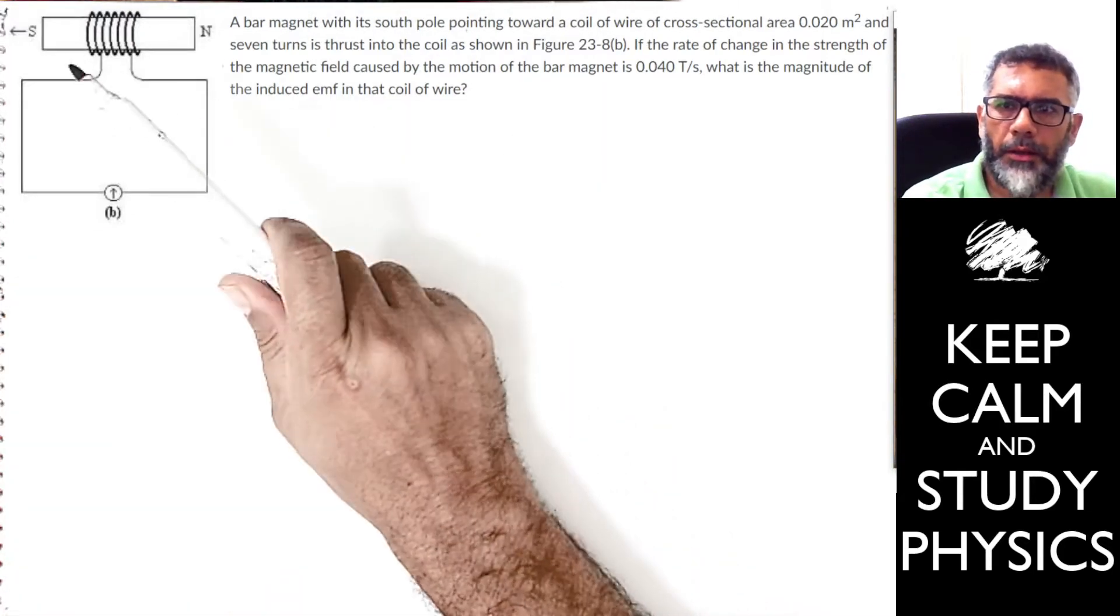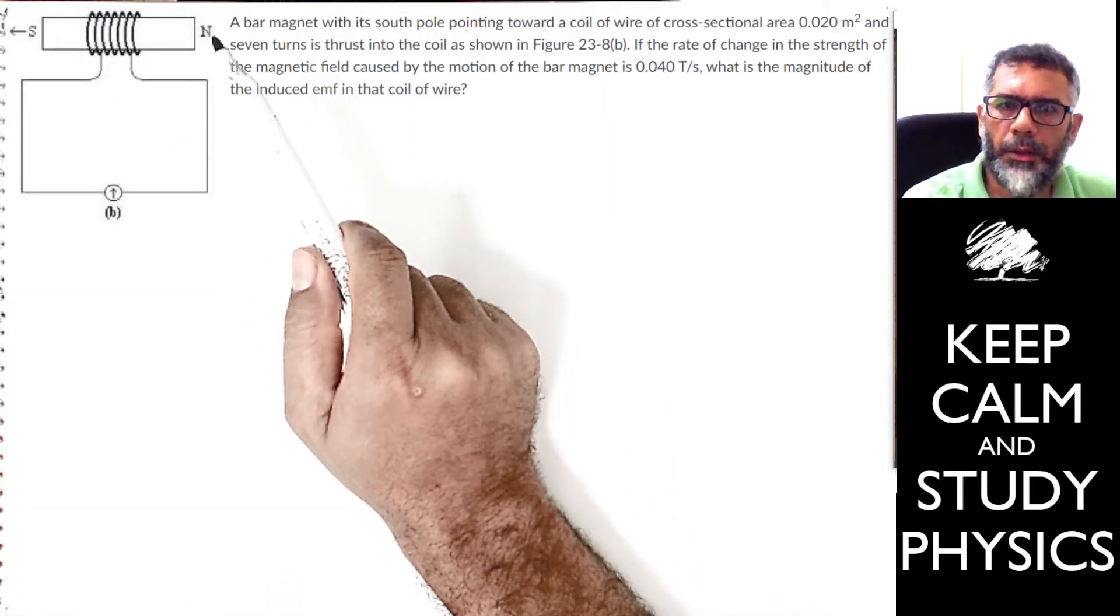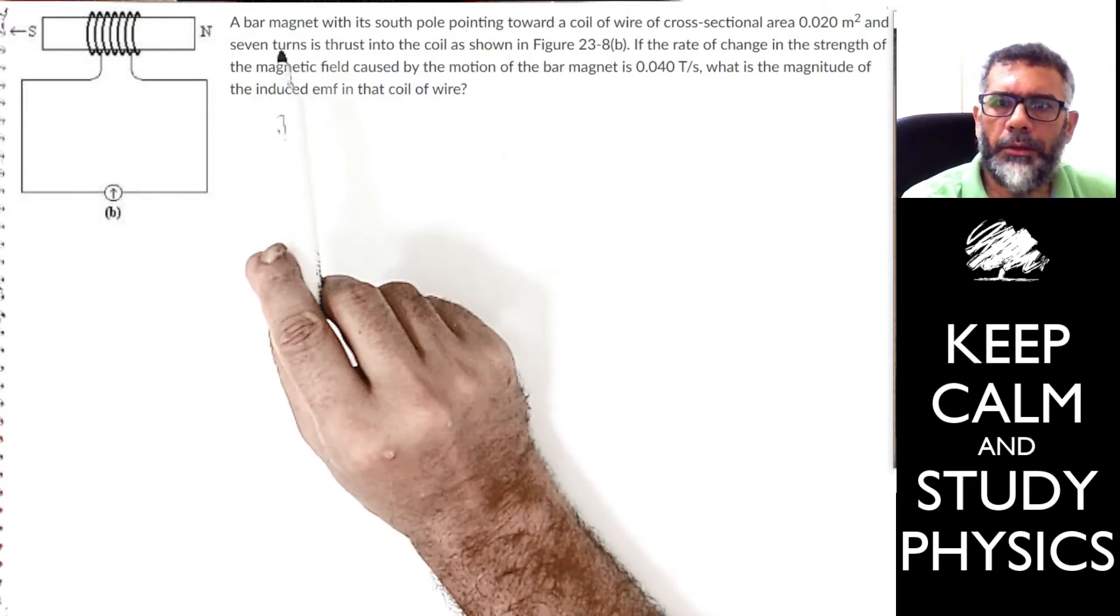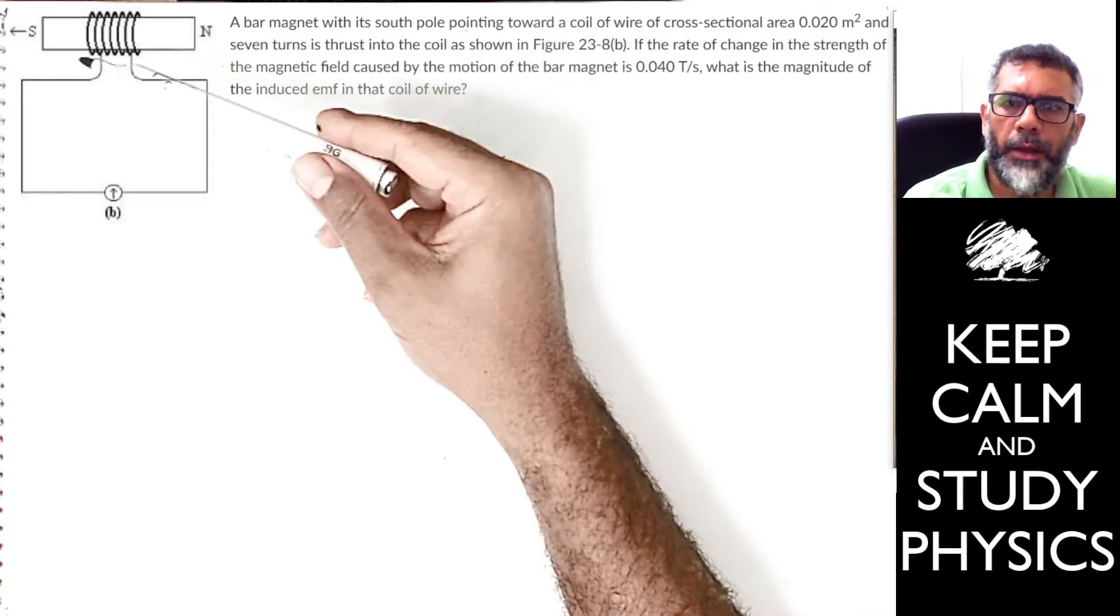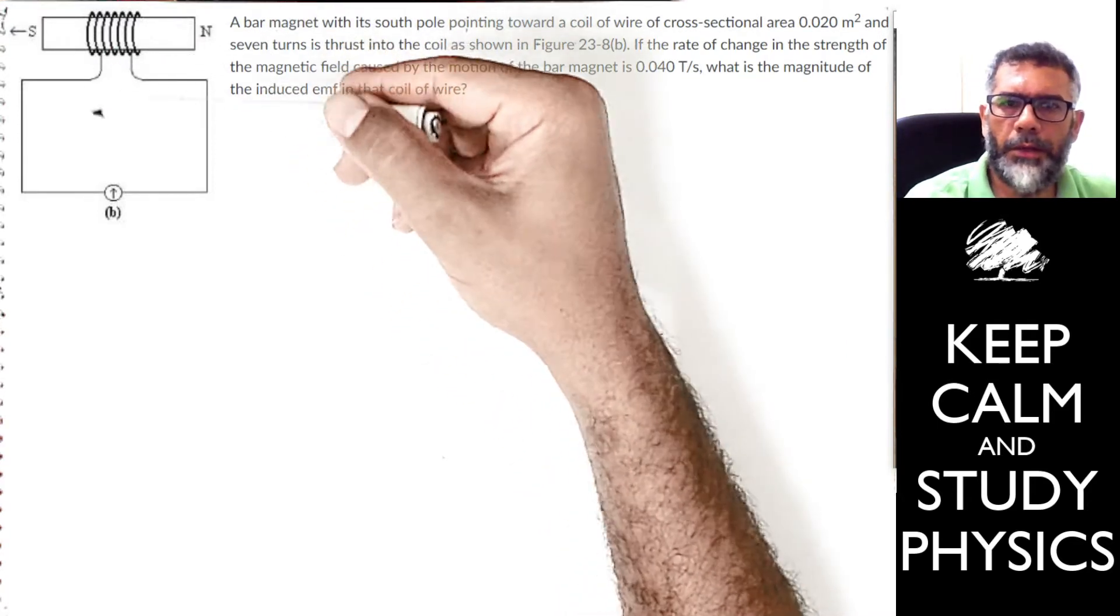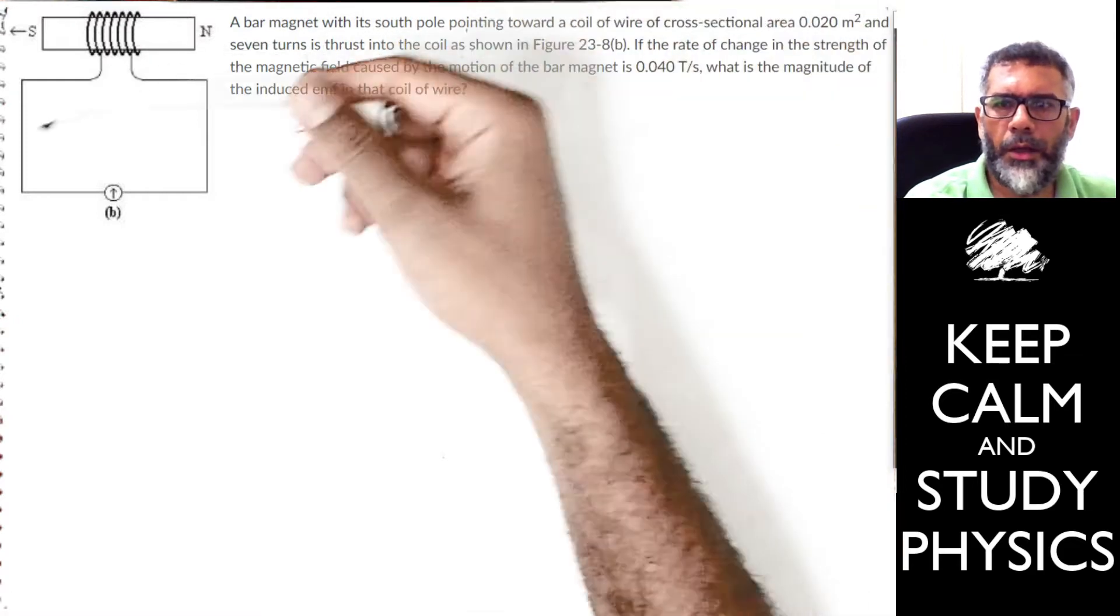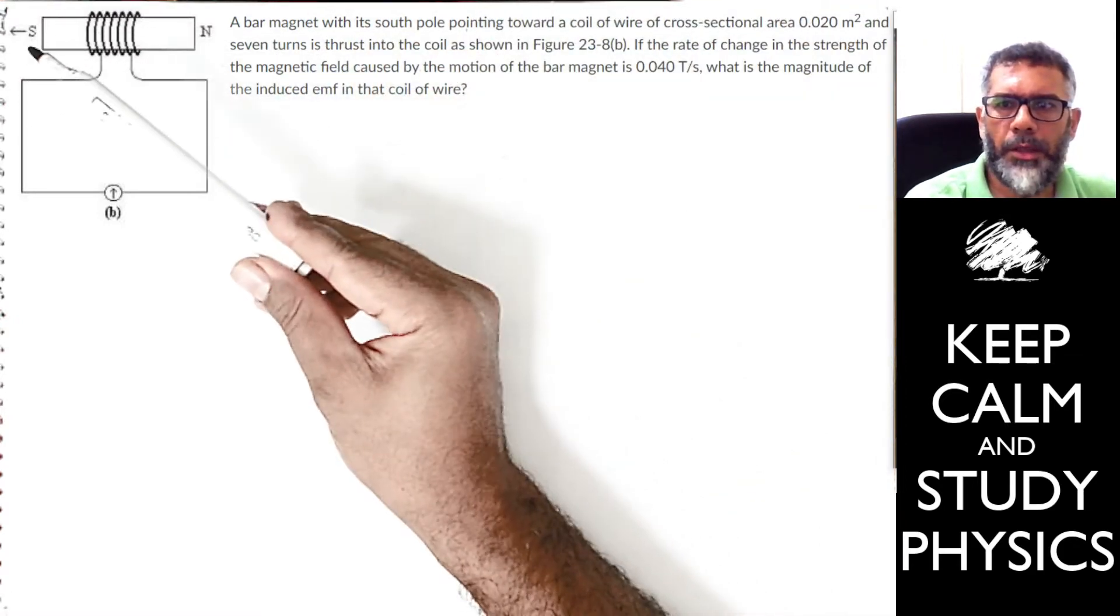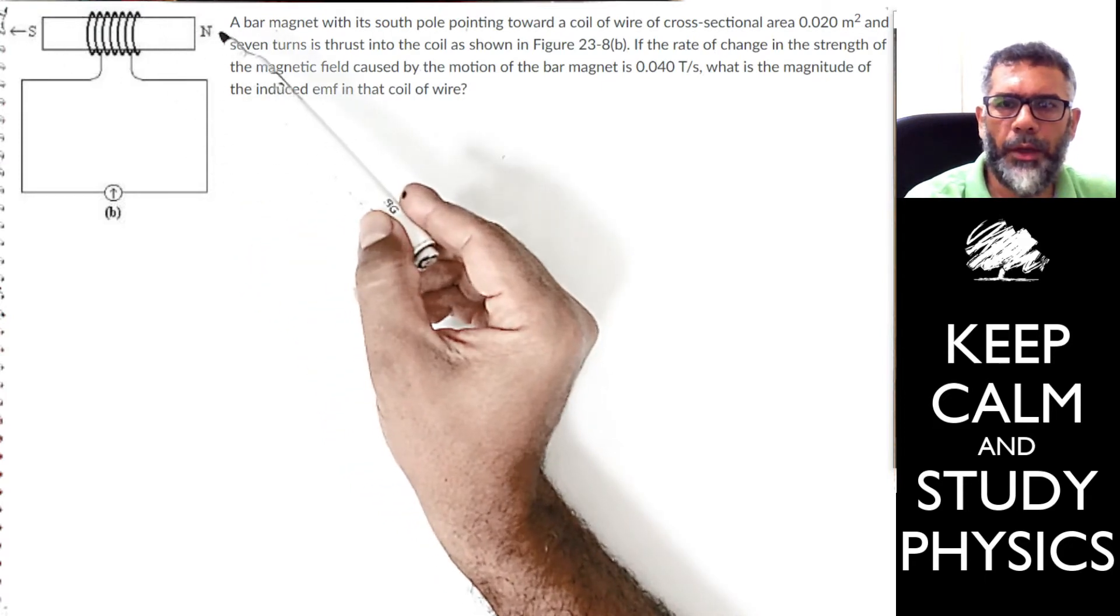We have a magnet which is inserted into a coil of 7 turns. What it means is that you have a wire coil which has 7 turns, and inside it we just pushed this bar magnet with the south pole here and the south pole on the right.